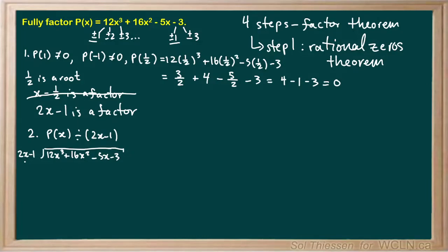We ask ourselves, what do we multiply 2x by to get 12x cubed? The answer is 6x squared. Then we multiply 6x squared by 2x minus 1 to leave us with 12x cubed minus 6x squared. We're going to subtract this from our polynomial, which means that the signs will flip. So 12x cubed minus 12x cubed is 0. 16x squared plus 6x squared gives us 22x squared.